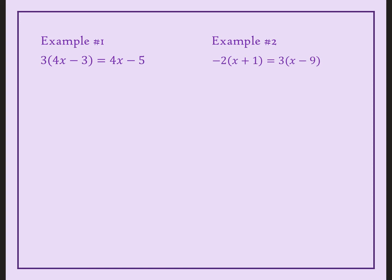So I typically draw arrows, and these arrows are going to remind me that I need to multiply 3 times 4x and 3 times negative 3. So when I multiply 3 times 4x, I get 12x. And then when I multiply 3 times negative 3, I get negative 9. Don't forget that you distribute to everything. That's one of the biggest mistakes that students make.